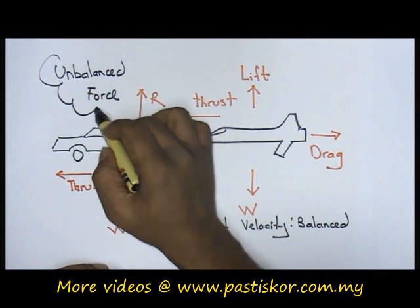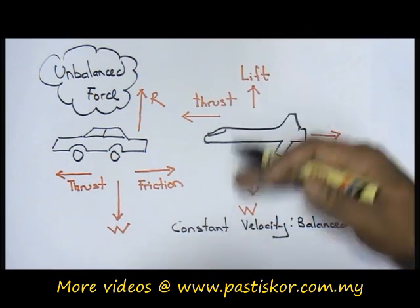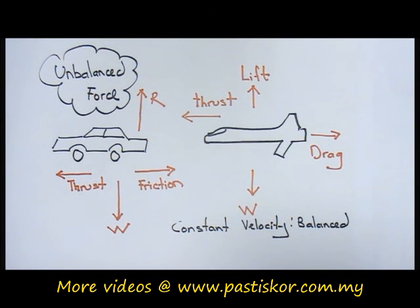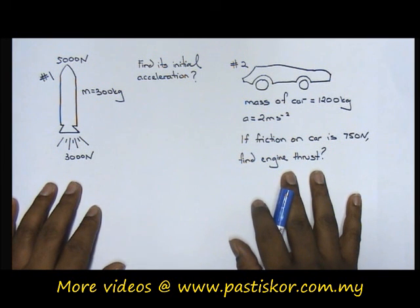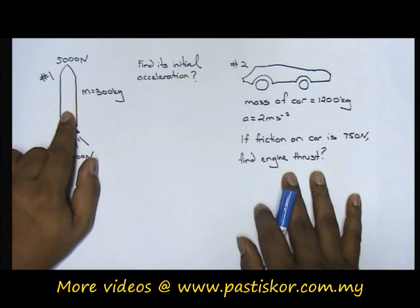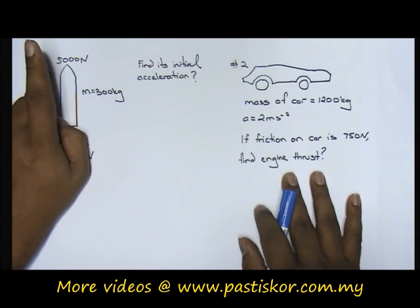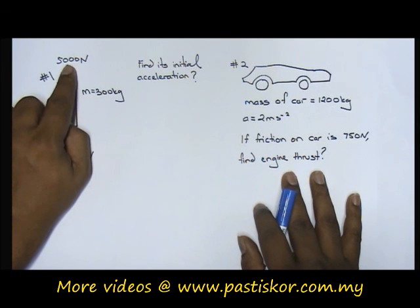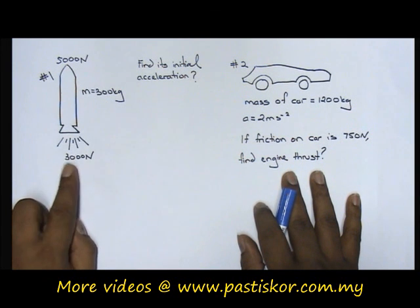An unbalanced force in this case is due to acceleration. If the plane lifts, up and down also becomes unbalanced. Now I'll give you a few examples to see whether you understand the concept. The first example shows a rocket with a mass of 300 kilograms, and the thrust of the rocket moving upwards is 5000 newtons. Since the mass is 300 kilograms, the weight is 3000 newtons.